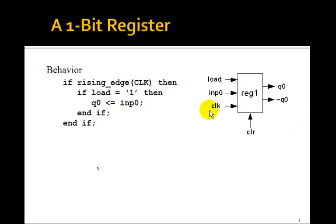Then we can describe the behavior of this 1-bit register with just this IF statement. If the rising edge of the clock, then if load is 1, we want Q0 to get input 0. And if load isn't 1, then this IF statement isn't executed and nothing happens. That is, Q0 will just stay the same. So here is a way to describe the behavior of a 1-bit register.